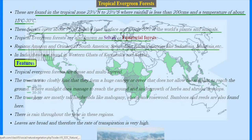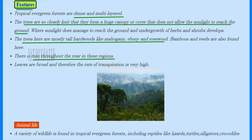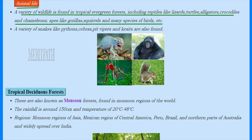Tropical evergreen forests are always dense and multi-layered. Trees are very close to each other and form a huge canopy that doesn't allow sunlight to reach the ground. Where sunlight does reach, there is growth of undergrowth herbs and shrubs. Trees are mostly tall hardwood species such as mahogany, ebony, and rosewood, and bamboos and reeds are also found here. Rainfall occurs throughout the year, leaves are very broad, and the rate of transpiration is very high.